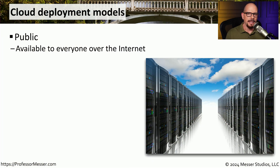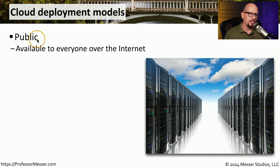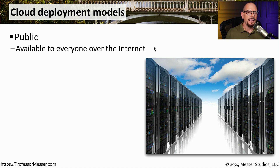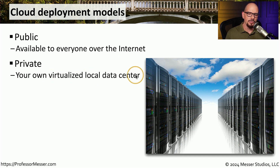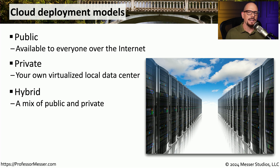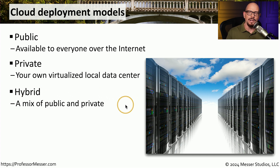When you're deploying a cloud-based application, you also need to consider who will be accessing that application and from where. If you're creating an application that anyone on the internet would need to access, you would probably want to include it in a public cloud so that everyone can gain access. But if you're building a cloud-based application that is for internal use only, you may want to deploy this to your own virtualized local data center where you have a private cloud. In many organizations, we often use both of these, and we need a hybrid configuration of both public and private clouds for all of these applications.